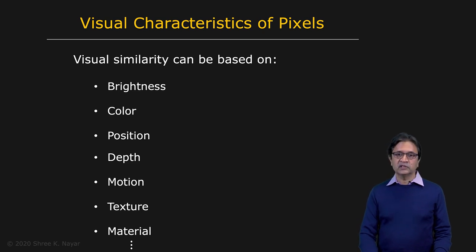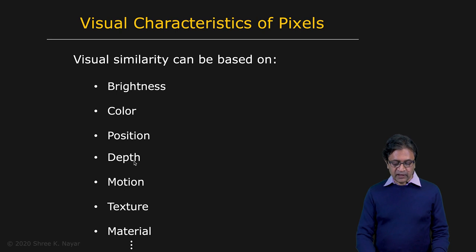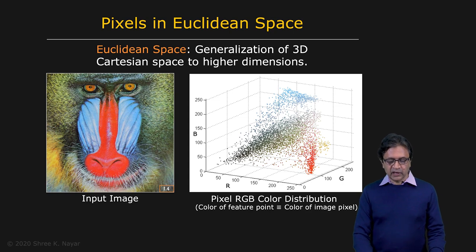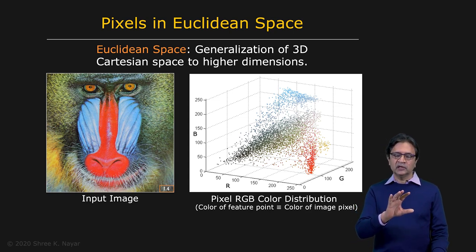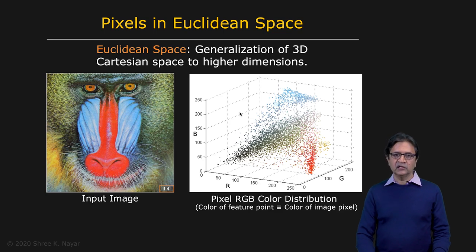And in the future, as I mentioned before, we will likely have cameras that can even measure the material properties at a pixel. So you can have a fairly elaborate set of characteristics or attributes at a pixel. This can be seen as a feature vector. So the idea is to take your image and map it into a distribution in some feature space.